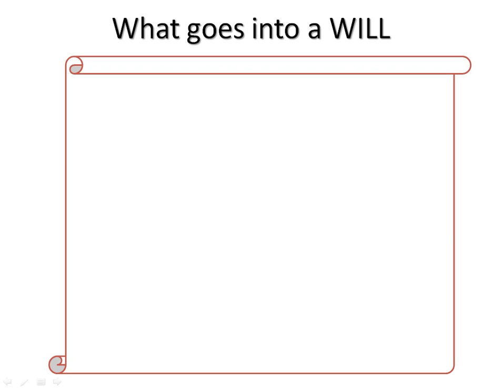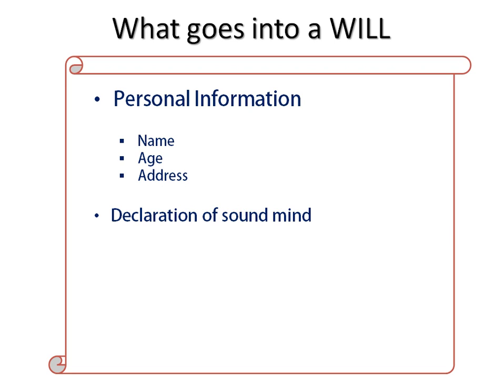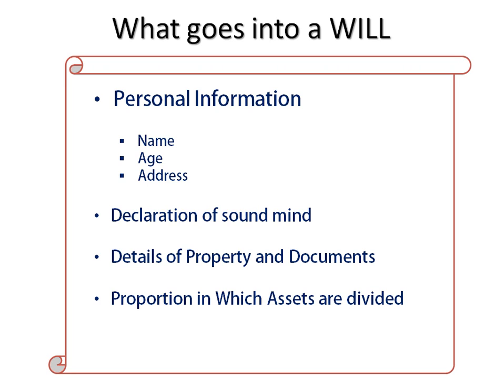Now let's see what exactly goes into a will — what are the components of it. The first thing you have to mention is personal information like name, age, and address. The second point is a declaration of sound mind — one has to clearly state that he or she is of sound mind and there is no pressure to write this will. Then come details of property and all documents, the proportion in which assets are divided, and finally signatures.